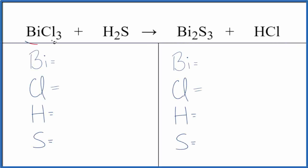Let's balance the equation for BiCl3 plus H2S. First thing we need to do is count the atoms up. One bismuth, three chlorine, two hydrogen, and one sulfur.